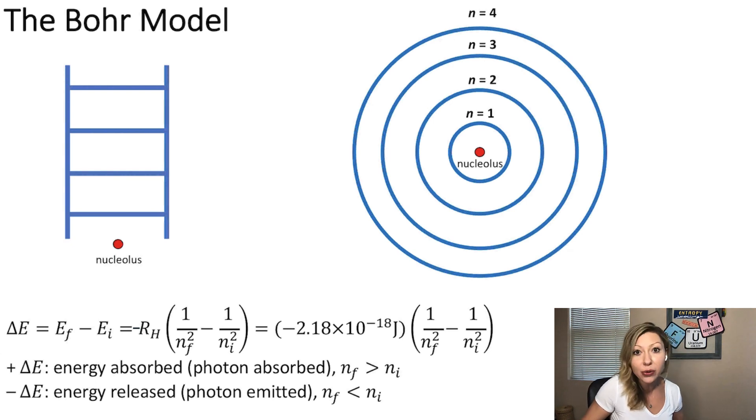For example, if you have an electron on N equals 1, which is right here, so for hydrogen, this is N equals 1, the ground state, the lowest energy state.